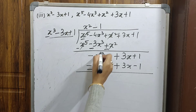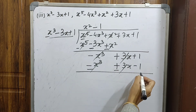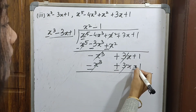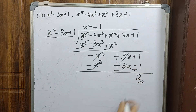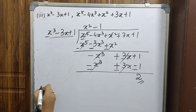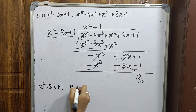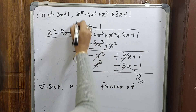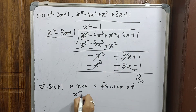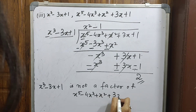We subtract: -x³ cancels, 3x and -3x cancel, and +1 minus -1 gives +2. The remainder is 2, which means the first polynomial x³ - 3x + 1 is not a factor of the second polynomial x⁵ - 4x³ + x² + 3x + 1.